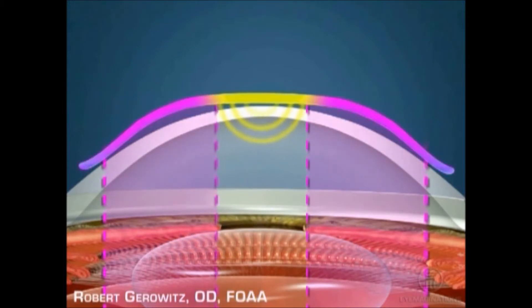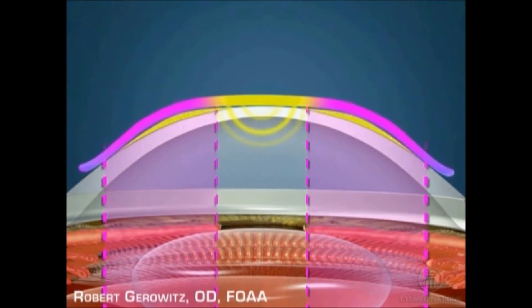The outer part of the lens surrounds the central visual zone and is farther away from the cornea, allowing room for the cornea to change shape.